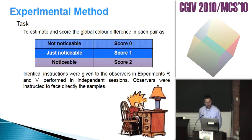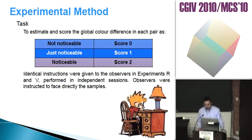The task for observers was to estimate and score the global color difference in each pair as: non-noticeable (score 0), just noticeable (score 1), or noticeable (score 2). Identical instructions were given to observers in Experiments R and B, performed in independent sessions. Observers were instructed to face the samples directly to avoid color shifts with viewing angle typical in LCD monitors.